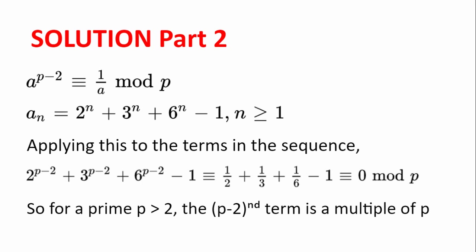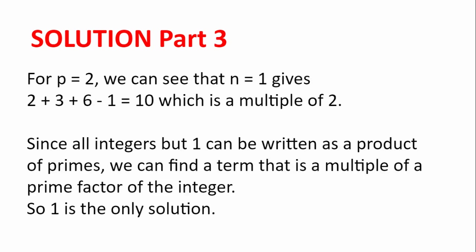Notice that we cannot have the prime p equal to 2, because then we would get the zeroth term, which doesn't exist. However, we can look at p equals 2 separately: n equals 1 gives 2 plus 3 plus 6 minus 1 equal to 10, which is a multiple of 2. So the first term of the sequence is not relatively prime to 2. Now for all other integers which are not prime apart from 1: since all integers apart from 1 can be written as a product of primes, we can find a term that is a multiple of a prime factor of that integer, and so find a term that is not relatively prime to the integer, because they share that prime as a common factor.